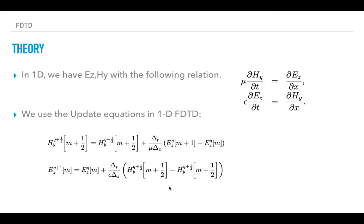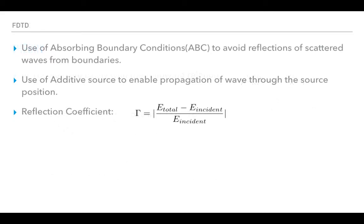From these update equations we will be forming the 1D FDTD code. The rest of the theory involves use of absorbing boundary conditions, additive sources, and figuring out the reflection coefficient.